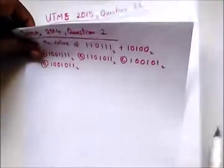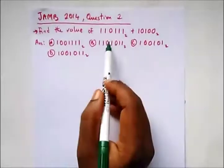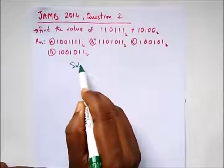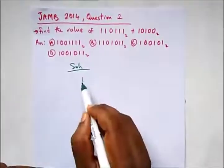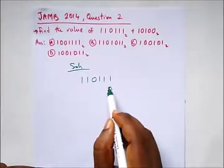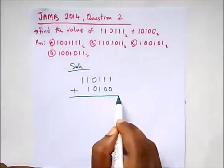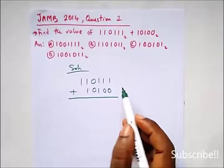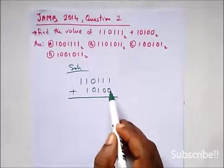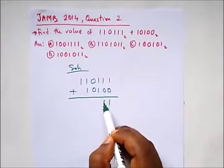Our next question says, find the value of 110011 in base 2 plus 110111 in base 2 plus 00101. We should add this together. So what do we have? We have here 1, since this is not greater than 2 or equal to 2. And 1 plus 0, we have 1.